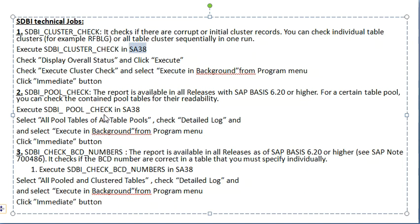Next is the STBI Check BCD Numbers. This report is available in all releases and checks whether the BCD numbers are correct in the specified table. You must specify individual tables. The job is executed in SA38. After completing this job run, we proceed to download the software section using the Maintenance Planner.